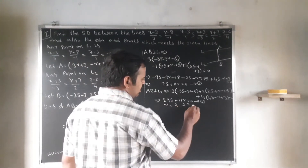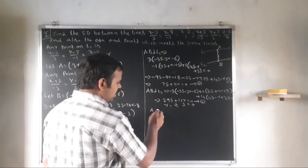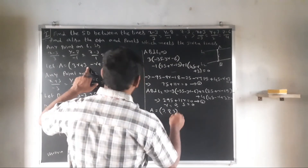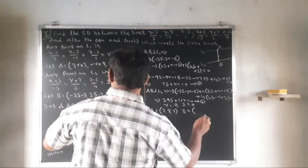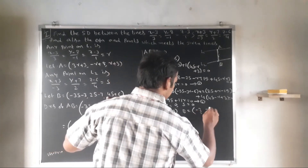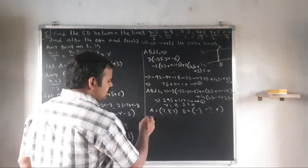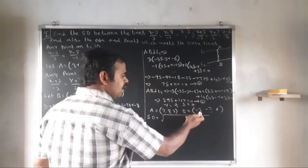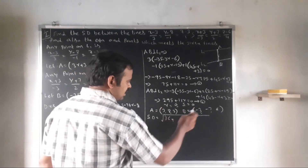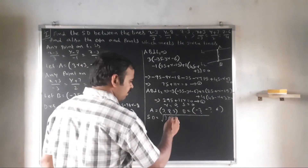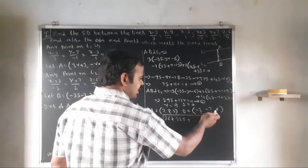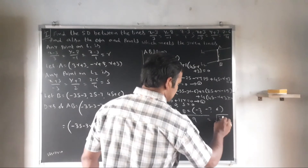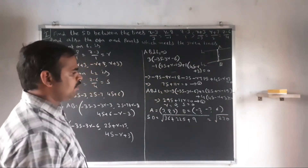With R = 0 and S = 0: A = (3, 8, 3) and B = (-3, -7, 6). The distance AB = √[(−3−3)² + (−7−8)² + (6−3)²] = √[36 + 225 + 9] = √270. So SD = √270.